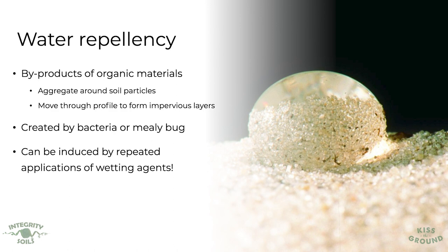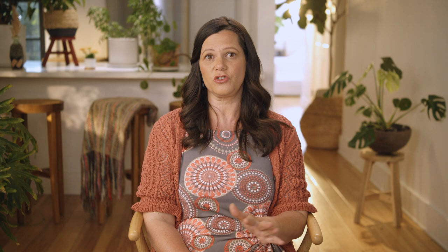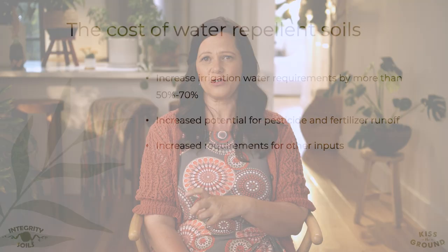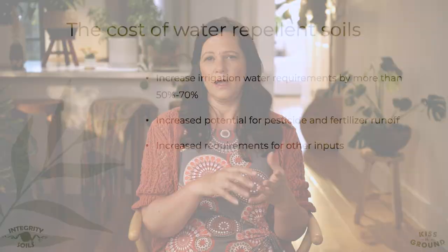There is also an insect called pasture mealybug, which many of you unfortunately have. It makes a waxy coating that contributes to water repellency in our soil. We also find that if you are repeatedly using wetting agents, they can actually lead to water repellency as well. So watch what you're currently using and make sure you're monitoring how water is moving through. The cost of not addressing water repellency is that you may be increasing your irrigation water requirements by 50 to 70 percent, with increased potential for runoff and increased requirements for other inputs.